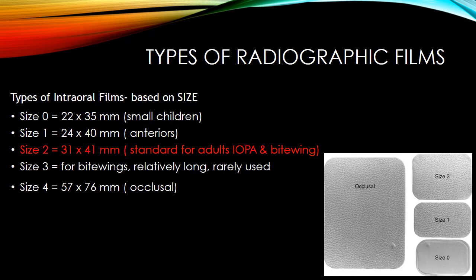Films can be categorized based on various parameters. One of the most common is size. Intraoral films are available in various sizes for various purposes. Size 0 is generally used in small children. Size 1 is most commonly used for imaging anteriors — from canine to canine, upper and lower. Size 2 is the adult IOPA, the most common form of IOPA used in practice.